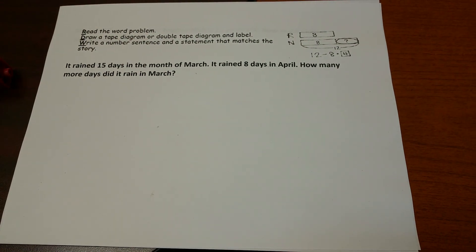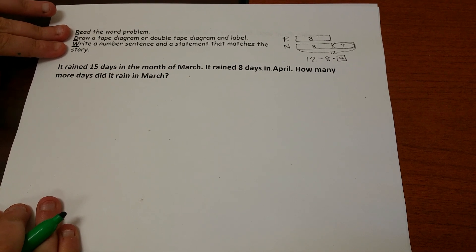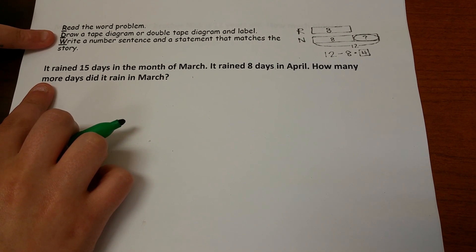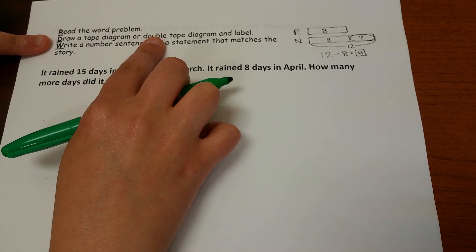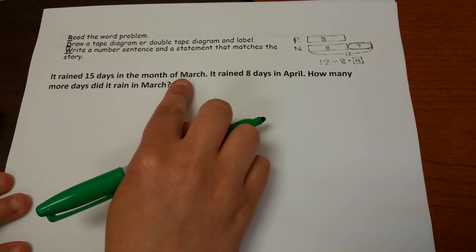After blocks, we'll be drawing tape diagrams. These are the directions for our word problems with tape diagrams: read the word problem, draw a tape diagram or double tape diagram and label. Today we're going to be doing a double, just like we did with the blocks. It rained 15 days in the month of March.